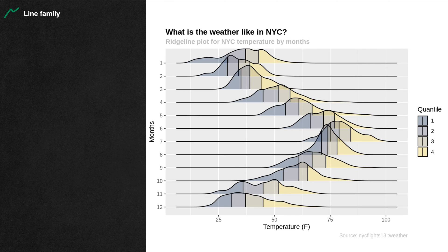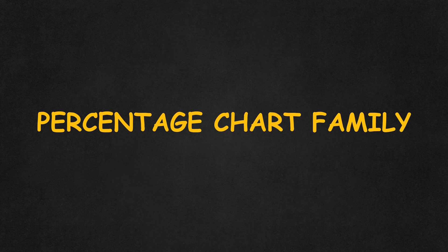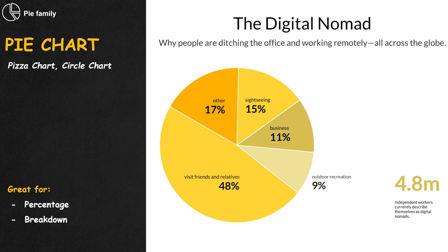When a horizon plot just highlights the line instead of the area, we have a ridge line plot — having multiple lines on top of each other creates an image of a mountain ridge line. Moving on to the percentage family: the most famous of them all is the mighty pie chart, which represents portions as slices of the whole circle.